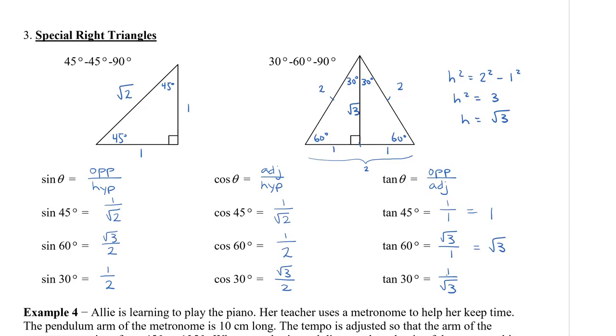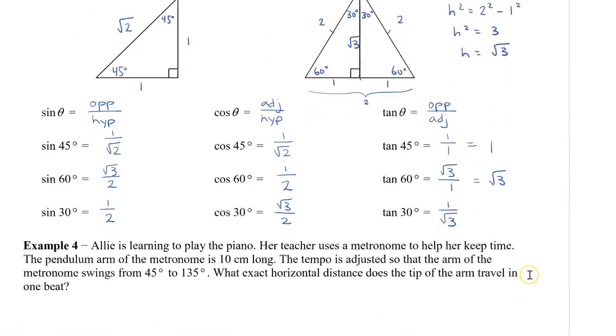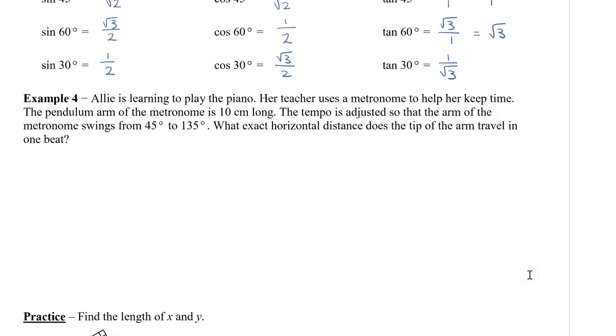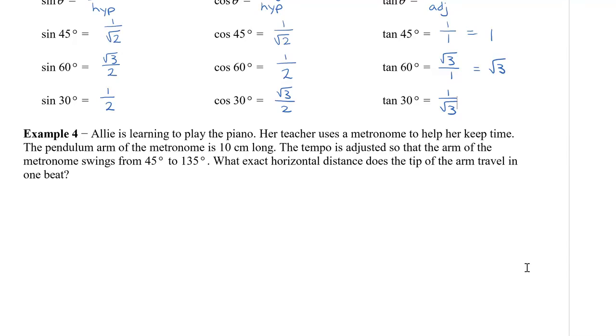I'm going to show you a couple of different ways that we can actually use to find the lengths of a triangle. Here I have a word problem. Allie is learning to play the piano. Her teacher uses a metronome to help her keep time. The pendulum arm of the metronome is 10 centimeters long. The tempo is adjusted so the arm of the metronome swings from 45 degrees to 135 degrees. What is the exact horizontal distance does the tip of the arm travel in one beat?